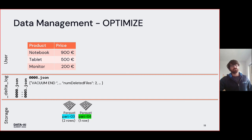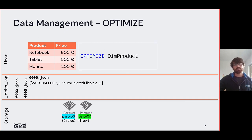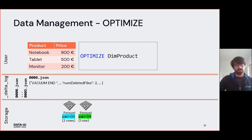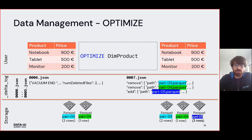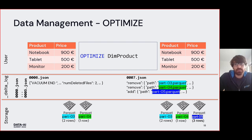The second key command is OPTIMIZE. Optimize consolidates smaller files into larger files. A major pain point for big data processing engines is that a large number of very small files creates significant metadata overhead. The optimize command merges small files into new larger ones. In the Delta log, the transaction shows the old small files logically removed and a new consolidated file added — though on storage the data exists twice temporarily until vacuum is run.